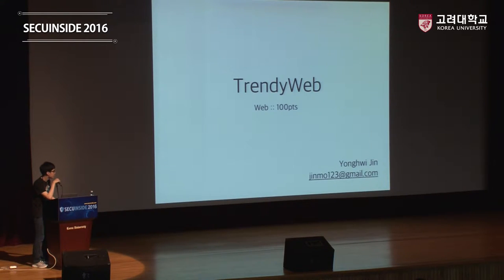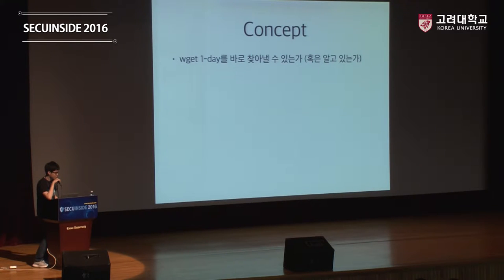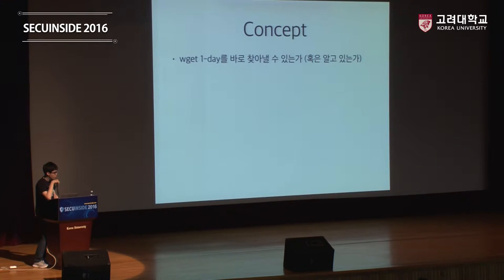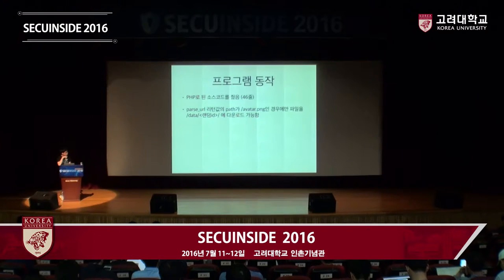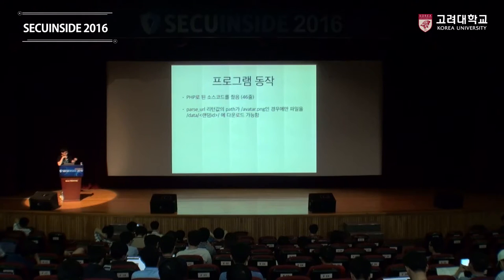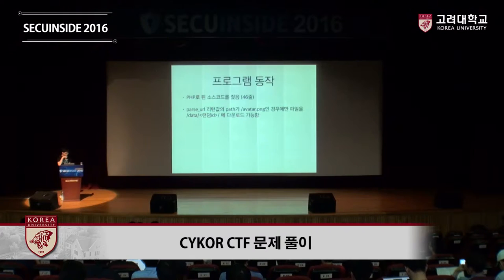다음으로 TrendyWeb이라는 문제를 출제를 했어요. 이 컨셉은 wget 원데이 취약점을 컨셉으로 낸 거거든요. 소스 코드를 줬었어요, wget을 사용한다고. 그래서 wget 원데이라는 것을 직감하고 바로 찾아낼 수 있는 능력을 보는 그런 문제였죠. 소스 코드는 되게 간단했어요, 그냥 PHP 46줄 파일 하나였고요. 거기서 간단하게 POST로 어떤 주소를 주면 이 URL에 path가, 그러니까 경로 부분이 avatar.png인지 보고 그럴 경우에만 세션마다 할당이 된 데이터의 랜덤 아이디에 다운로드가 가능하다. 이런 식으로 되어 있었죠. 다른 사람들 거 못 보게 그 데이터는 가려져 있었고요.